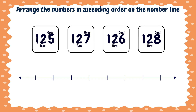Ones, tens, and hundreds. Then we will compare the hundreds places. Let's begin. Here there is one, here is one, also here is one, and here is one. The hundreds place is equal, so what do we do? We compare the tens place. The number two is found in all tens places.